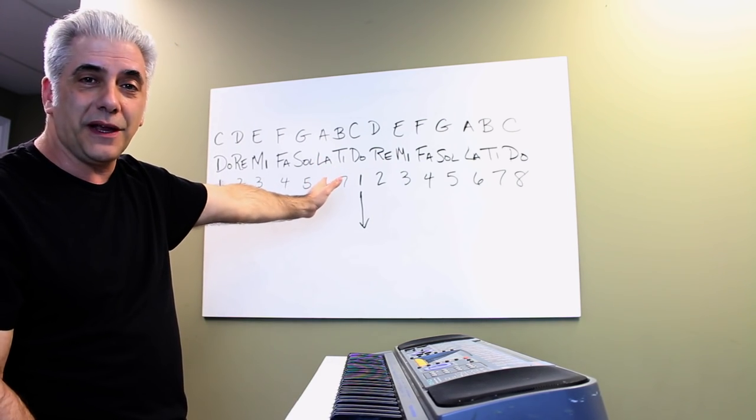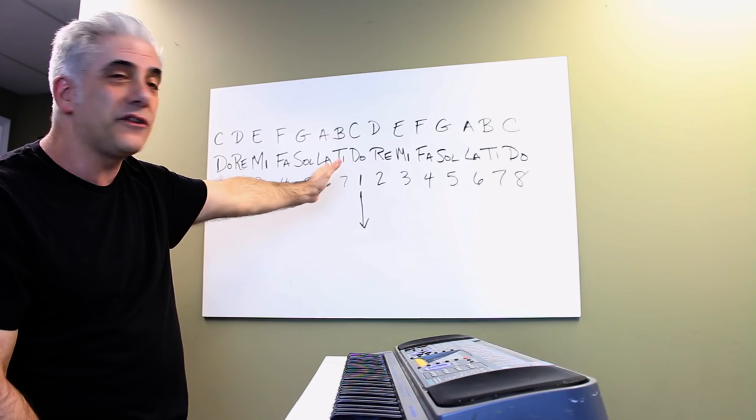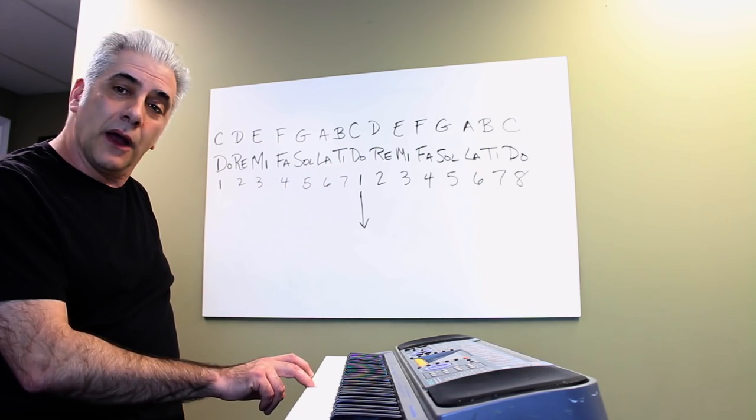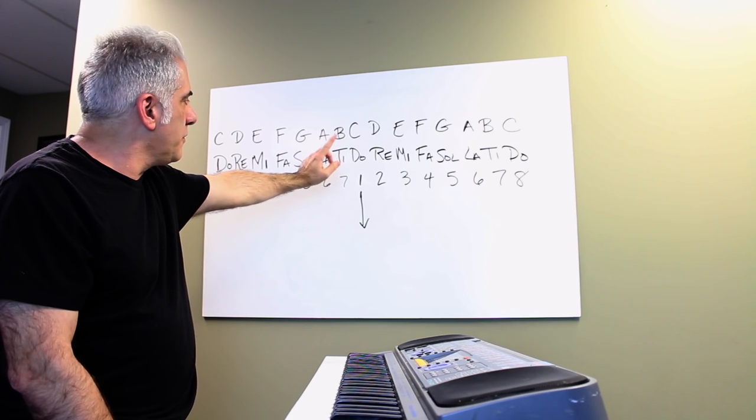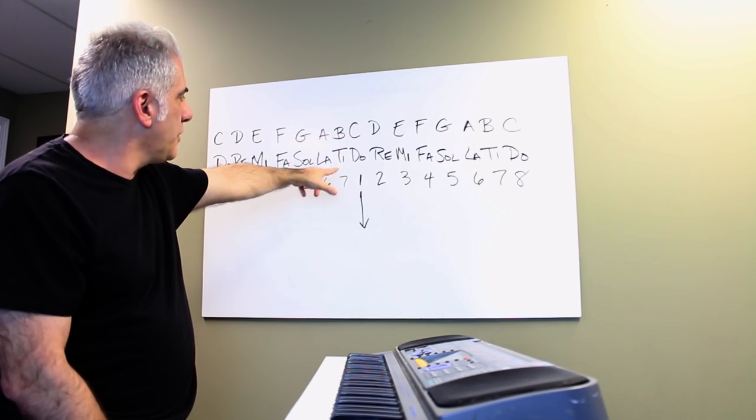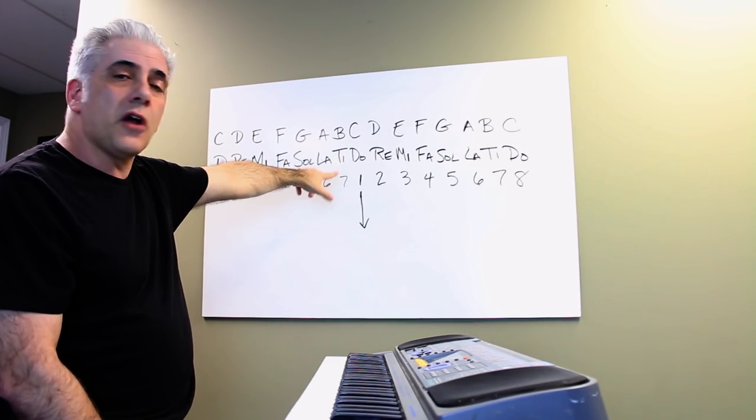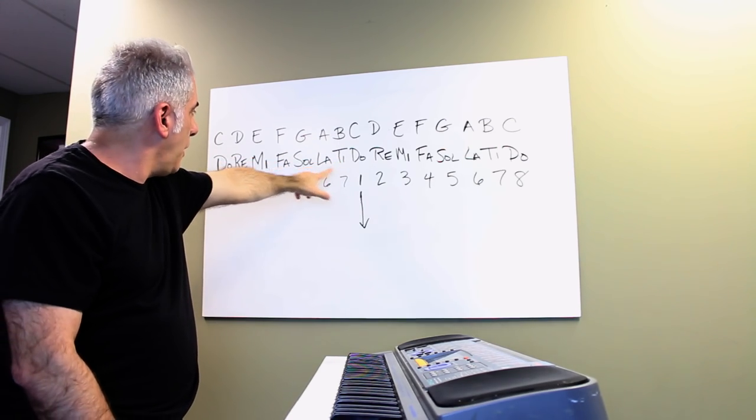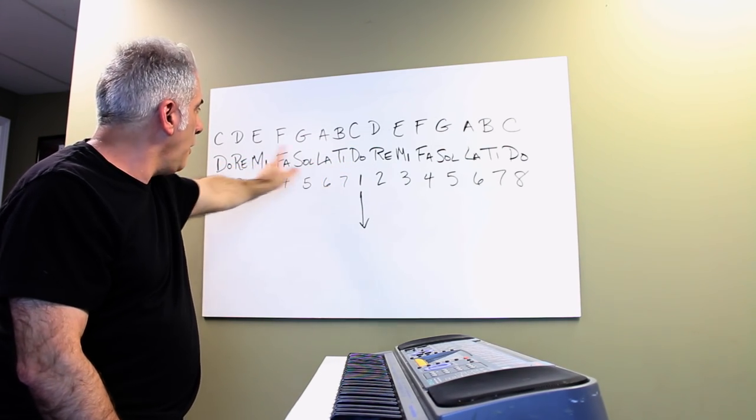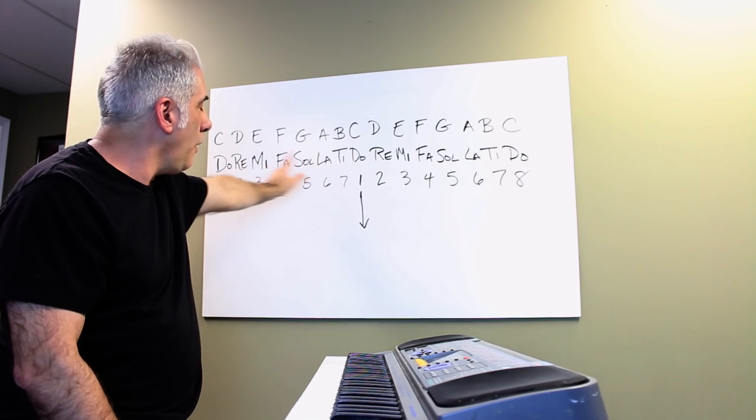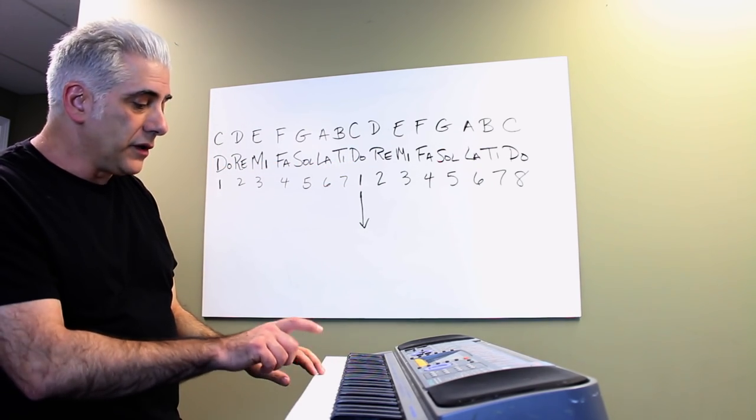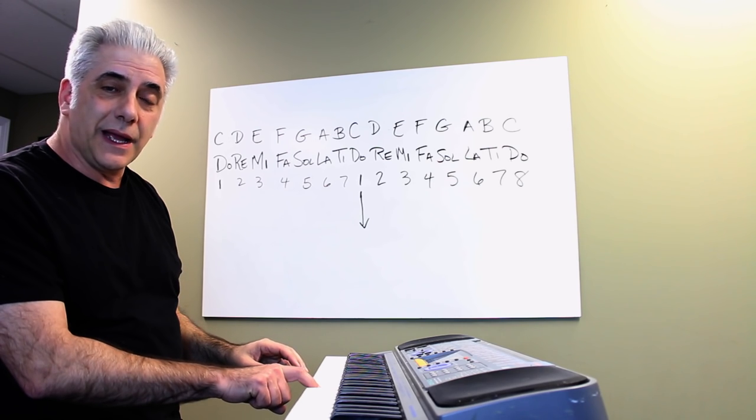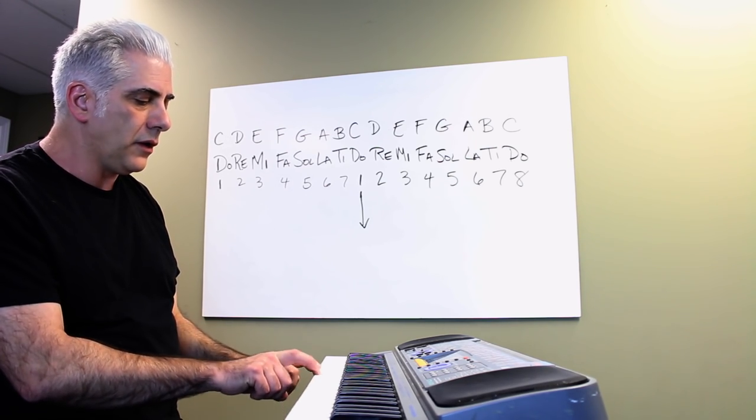The next thing we're going to do is the other way starting in the high do or high C. Do T Do, Do La Do, Do Sol Do, Do Fa Do, Do Mi Do, Do Re Do, Do Do Do Do. So when you're going you test it again.